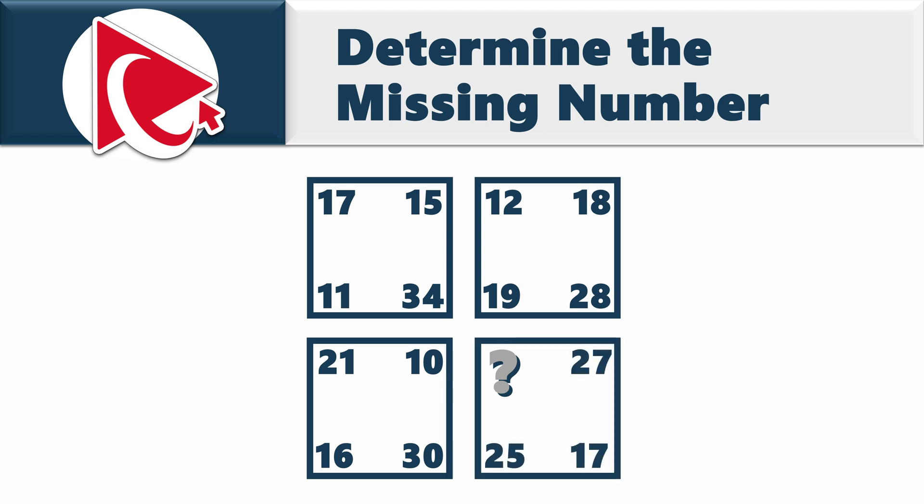And then comes the fourth square which has numbers 27, 17, 25 and then comes the missing number, which you need to calculate and select out of 4 possible choices. Choice A, 8. Choice B, 23. Choice C, 26. And last but not least, choice D, 31.